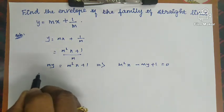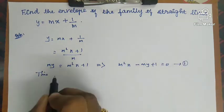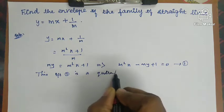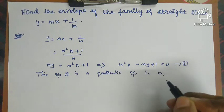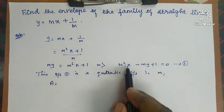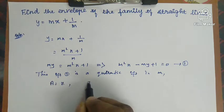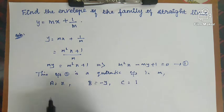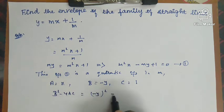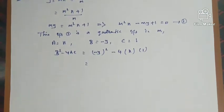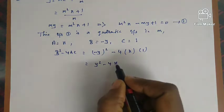This is the required equation of the envelope. Equation 1 is the quadratic equation in m, so we apply b² − 4ac = 0. From m²x − my + 1 = 0, the coefficient a = x (coefficient of m²), b = −y (coefficient of m), and c = 1 (constant term). Therefore b² − 4ac = (−y)² − 4(x)(1) = y² − 4x.